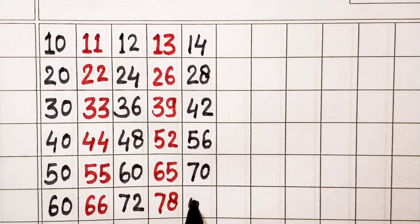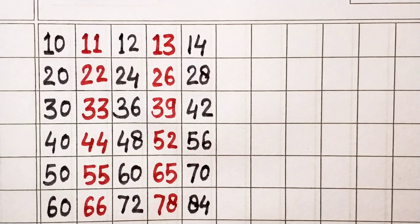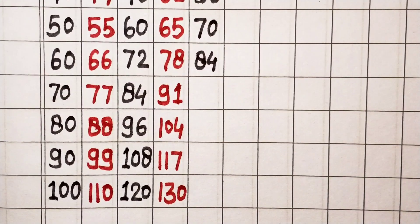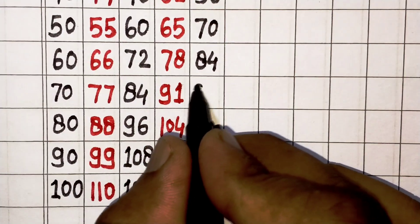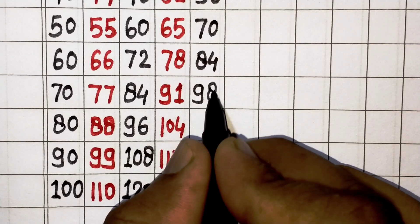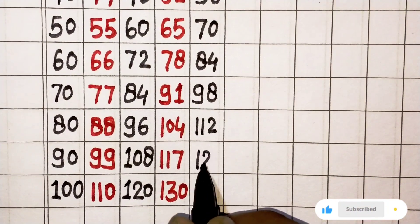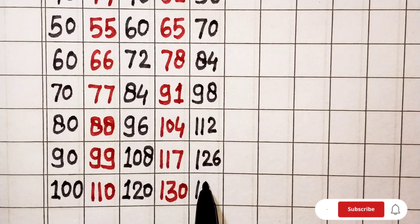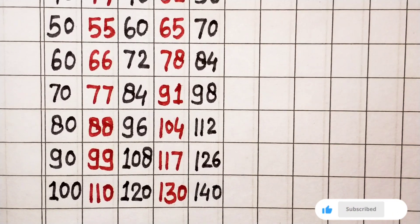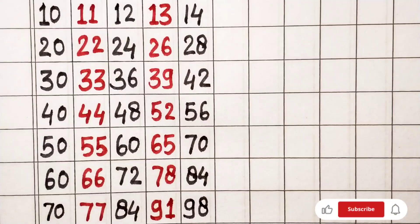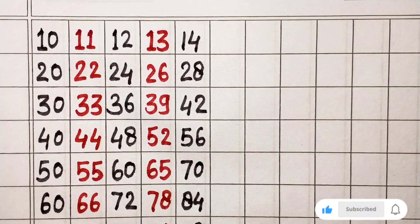14 times 6 is 84, 14 times 7 is 98, 14 times 8 is 112, 14 times 9 is 126, 14 times 10 is 140. Next, 15.